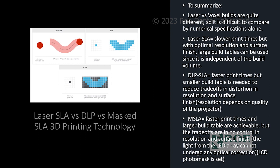Laser versus Vosil builds are quite different, so it's difficult to compare by numerical specifications alone. A laser SLA has slower print times but gives better optimal resolution and surface finish, with large build tables and efficiency independent of build volume. The DLP SLA has faster print times but a smaller build table, and requires trade-offs in resolution and surface finish to reduce distortion.